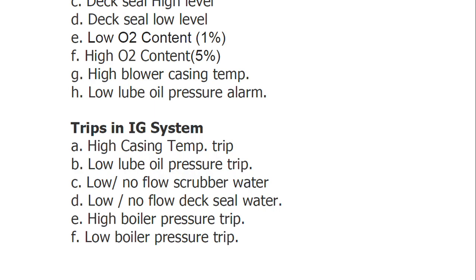There are other safeties as well — mast riser, PV valve, and PV breaker — which can also be counted under safety. Since the mast riser was not covered in the previous video on PV valve and PV breaker, we cover it here. During cargo loading, the mast riser provides an exit point for excess inert gas and hydrocarbon vapors to escape, avoiding over-pressurization of the cargo tanks.